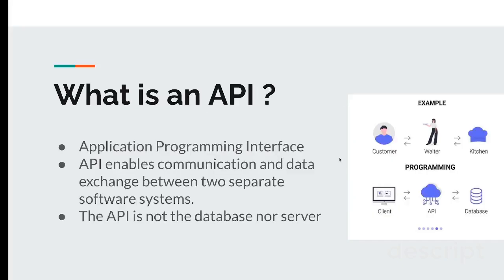First we're going to see what is an API. API stands for Application Programming Interface, which is a software intermediary that allows two applications to talk to each other. Each time you use an app like Facebook, send an instant message, or check the weather on your phone, you are using an API. API enables communication and data exchange between two separate software systems. API is not the database or even the server — it is the code that governs the access points for the server.